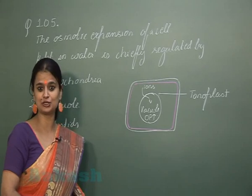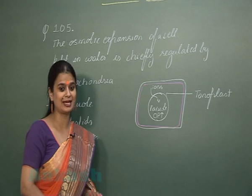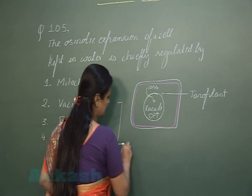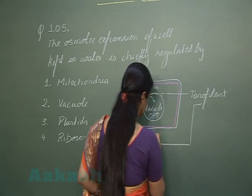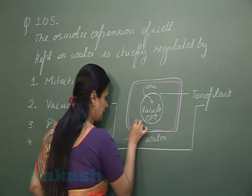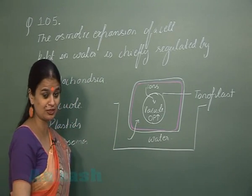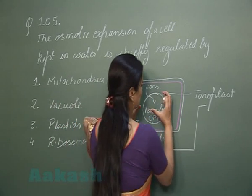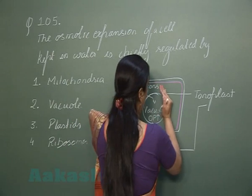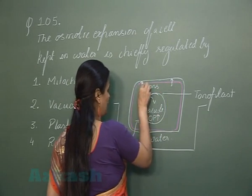Due to the accumulation of ions and other materials, the osmotic pressure inside the vacuole increases. When such a cell is placed in water, this cell absorbs water. Due to the absorption of water, the protoplasm swells. The swollen protoplast exerts pressure on the wall.